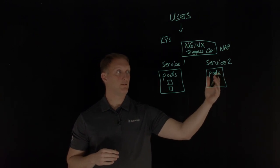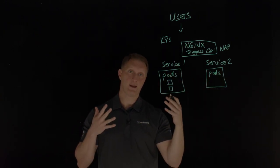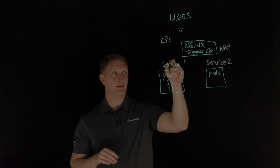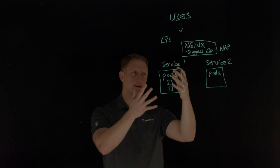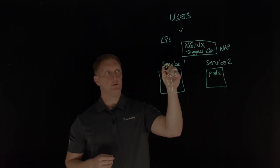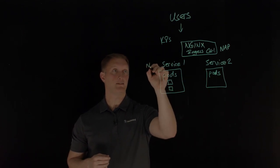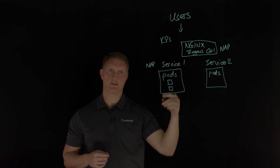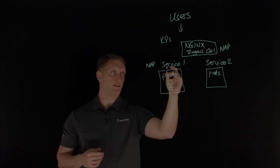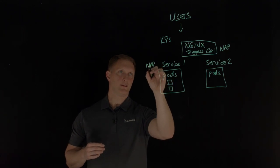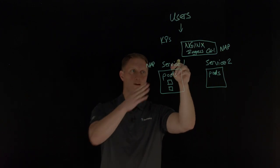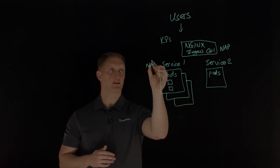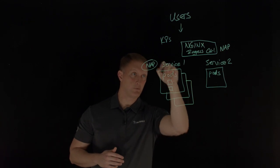But let's say your application runs a variety of services and maybe one of the services needs a bit more tuning or finer-grained sensitivity in terms of the policy defined for that service. If this is like a billing service where you're doing financial transactions, you can actually deploy the NGINX App Protect web application firewall as a per-service proxy. So if service one is a billing service, the NGINX App Protect WAF can be deployed at the service level that would cover all of the pods within that service.